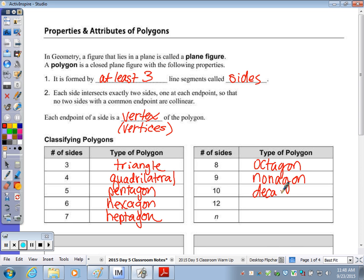Ten is decagon. Twelve is a dodecagon. Anything other than twelve and greater than ten is going to be n-gon. For example, you could see 18-gon, and that means an 18-sided polygon.